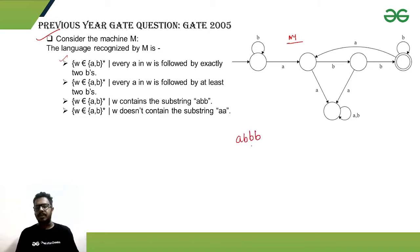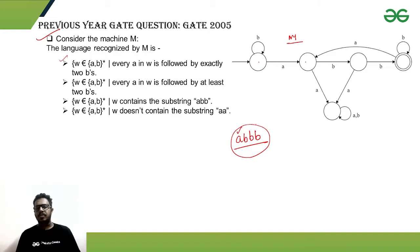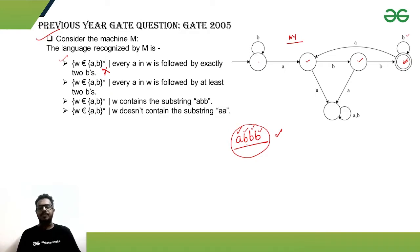Let's check the string 'abbb' — three b's. If option one is correct, this string should not be accepted. Starting from the initial state: on 'a' we move to one state, on 'b' to another, on the second 'b' we reach the final state, and on the third 'b' a self-loop keeps us in the final state. So 'abbb' is accepted, meaning option one is incorrect.